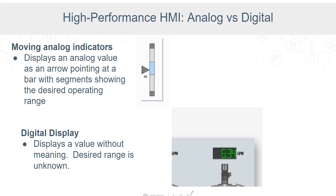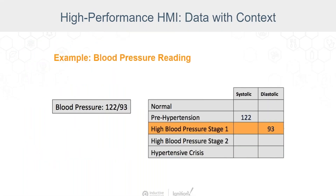Moving analog indicators are a great way to display whether a value is within a desired operating range. Even with only one number shown, you can tell you are within range — with a plain digital display you have no context or meaning. This is a good time to talk about data with context. The example on the left shows a blood pressure reading that most of us won't know how to interpret. The display on the right is more informative: it shows that the reading is high compared with the norm and where it falls on the spectrum of all possible readings.